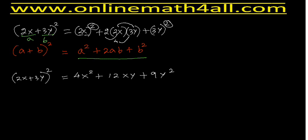When we don't remember the identity, we would have to write (2x + 3y)(2x + 3y) and multiply each term, which is a bit difficult. But when you remember the identity a + b whole square, we can easily expand any expression like (2x + 3y)². I hope students will be able to understand how to expand a given expression using this identity. For more videos like this, please visit www.onlinemathforall.com. Thank you.